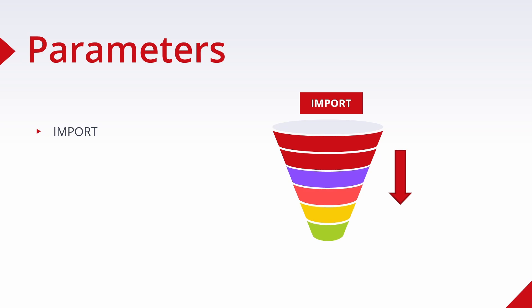Import parameters can be marked as optional so that they do not have to be supplied for the call. Export parameters are always optional - they return values from the function module to the calling program. Export parameters are received with the keyword IMPORTING in the calling program. As we have seen in the example, there is a mismatch in terminology: in the function module definition you use IMPORTING and EXPORTING, but when you call it you do the other way around, because based on the funnel analogy, you put data into the funnel and the function module gets it.